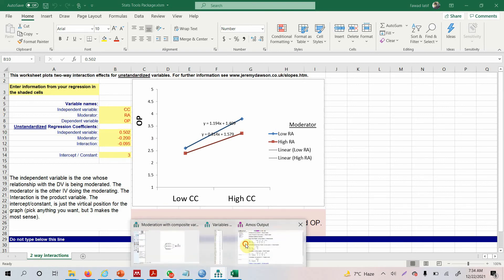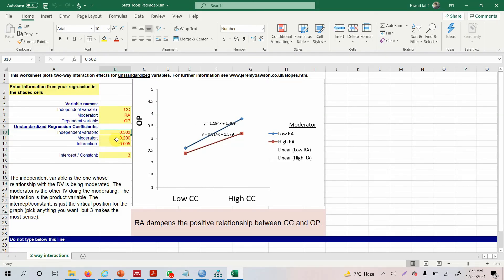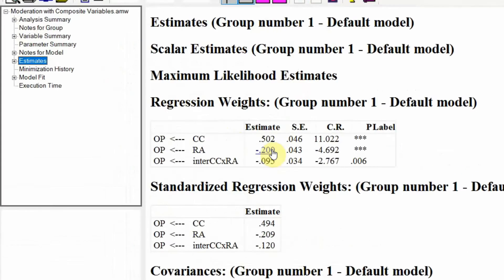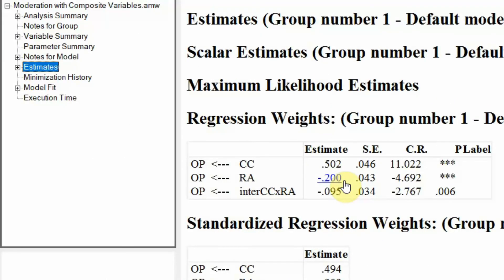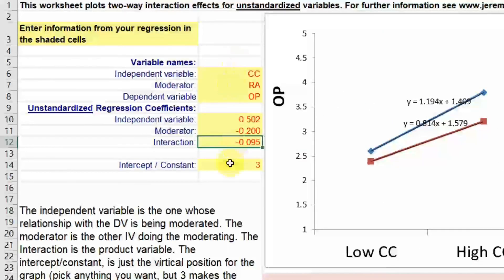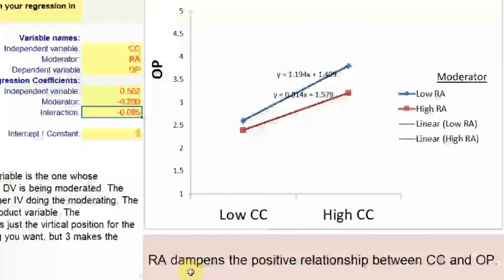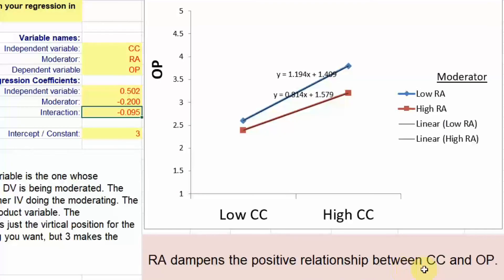In your results, look at CC to OP: 0.502. So you just add it here. Moderator to OP — that is moderator to your dependent variable — is minus 0.200. Here it is: minus 0.200, that is your role ambiguity to your dependent variable. And finally, your interaction term is minus 0.095. Once you add these values, you will get this graph, which shows that role ambiguity actually dampens the positive relationship between CC and OP.